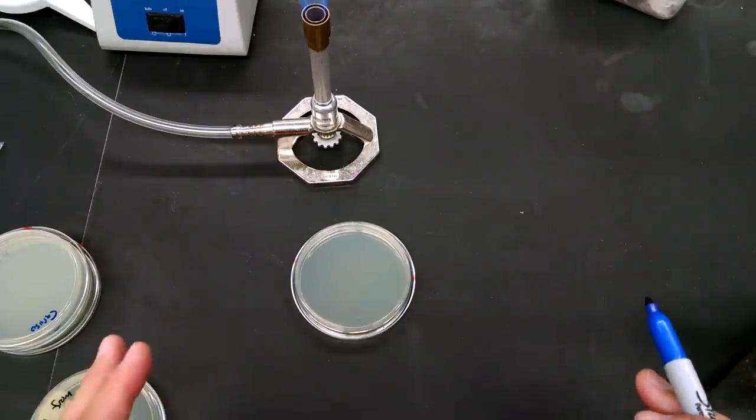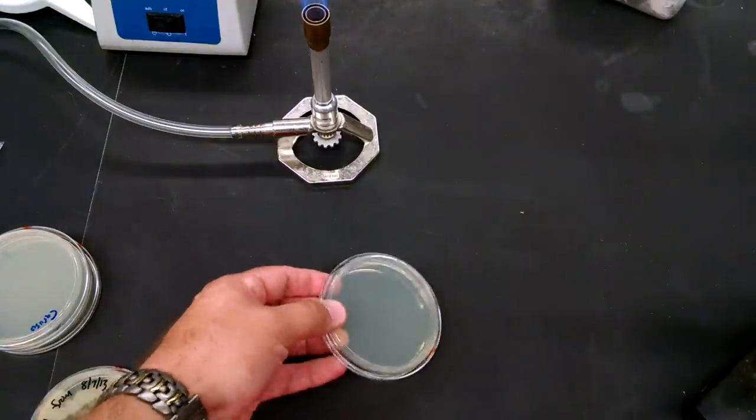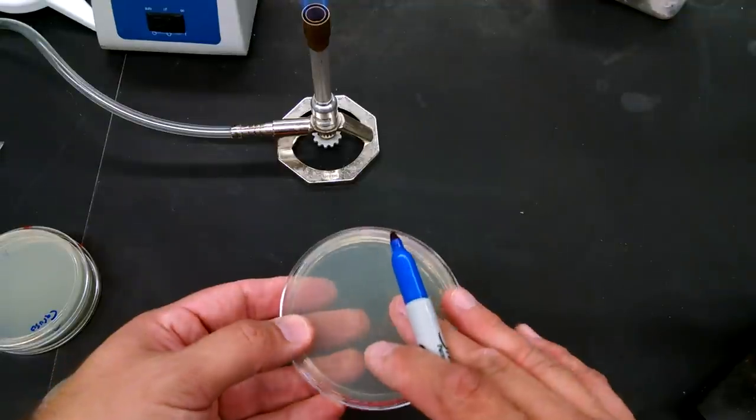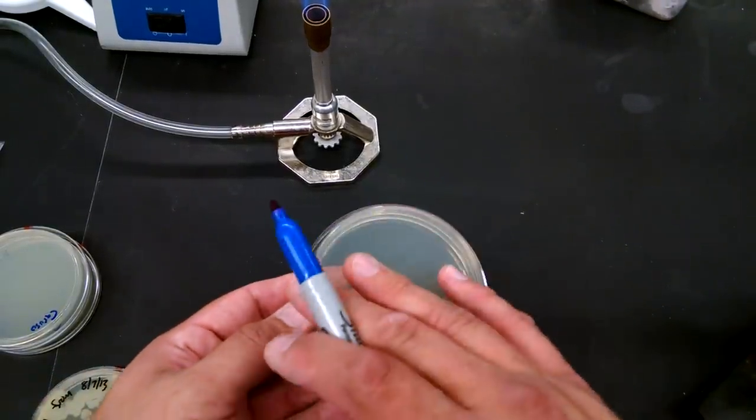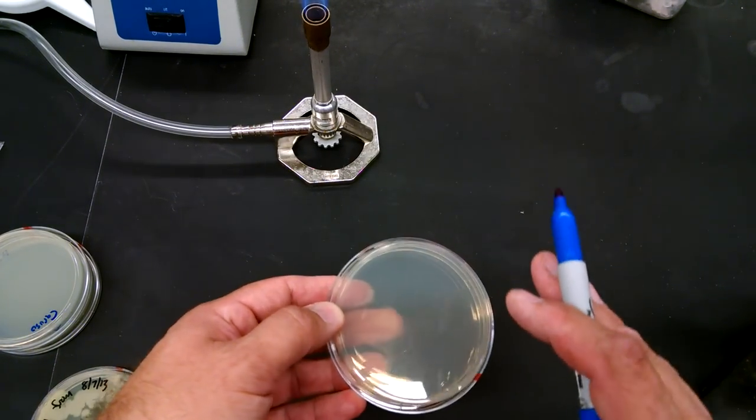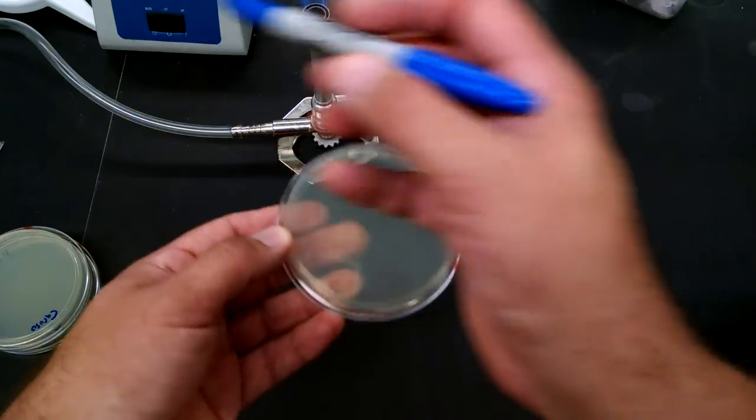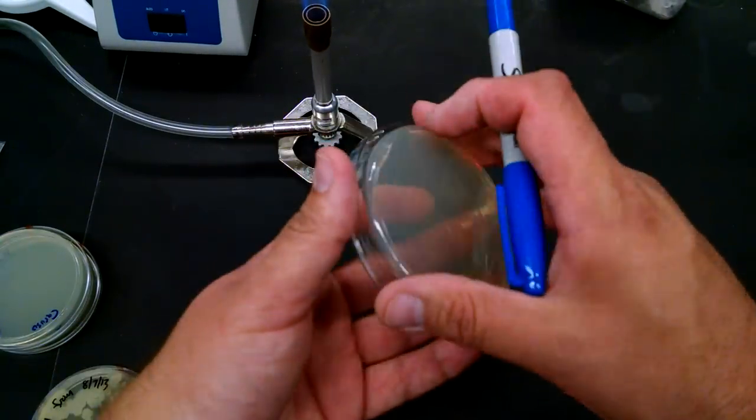Whether you're using a disposable loop or a flamed loop, what you're going to do is put some of your sample on the loop and then add it to the plate. The goal is to spread it out on the plate. What you're doing is a dilution on the plate. You're going to take some of your sample on the loop and spread it out. We're doing this inside the plate, of course.